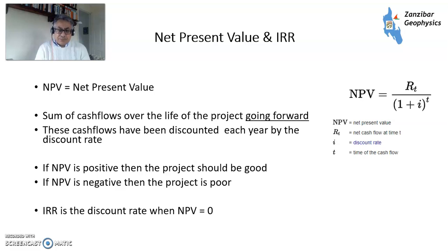Well, it's not quite as simple as that because companies have hurdles. The internal rate of return is the discount rate when the NPV equals zero. And here's the formula for those who are formula-minded.